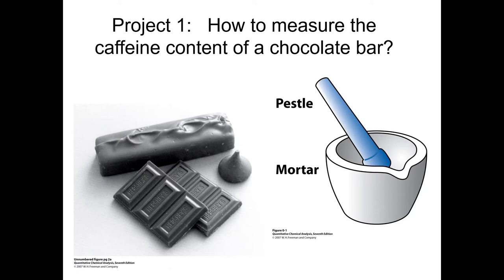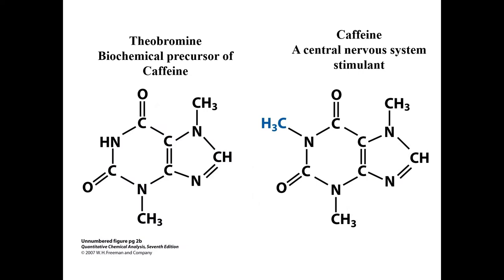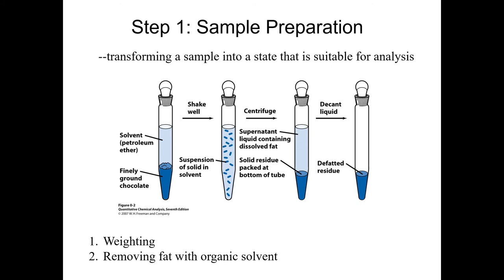Let's look at one example of chemical analysis where you want to investigate the caffeine content of a chocolate bar. It starts with sampling of the chocolate bar from the source, such as a chocolate factory. Then bring them to the lab and prepare all the apparatus needed for the investigation. You need to know the structure of caffeine and its derivatives that may appear in the results — you might get two results: caffeine itself and theobromine, the precursor of caffeine. After sampling, you will start to do sample preparation, which is the step where you transform a sample into a state suitable for analysis.